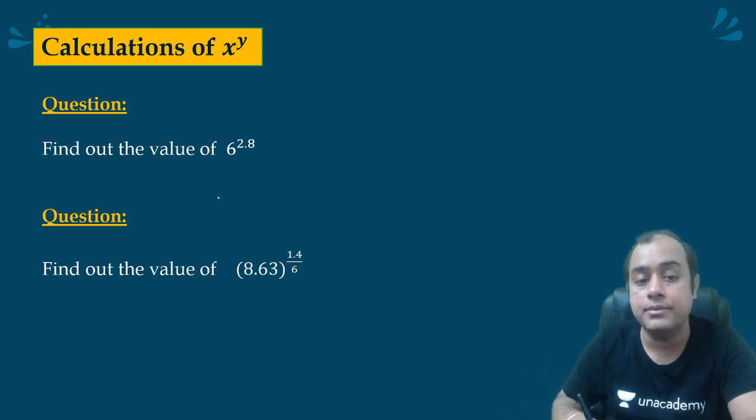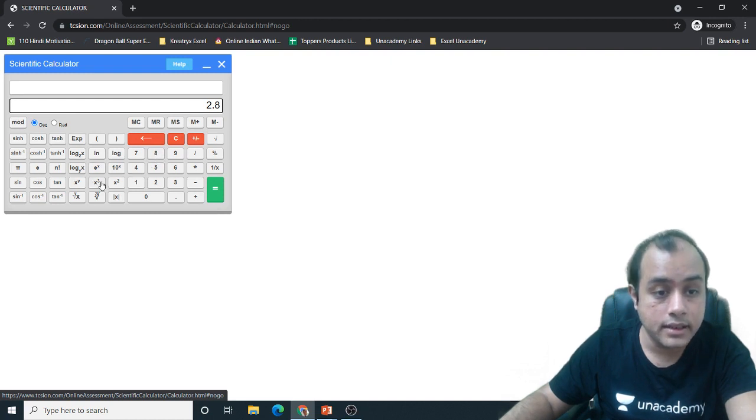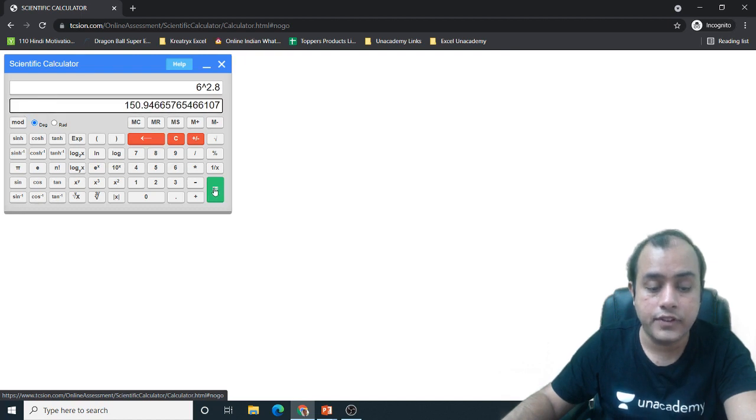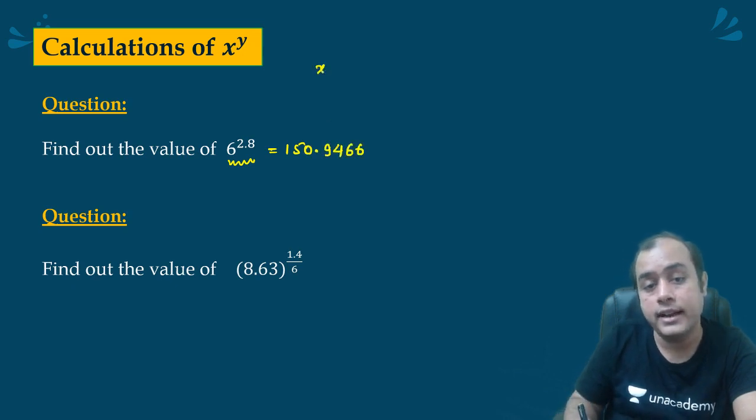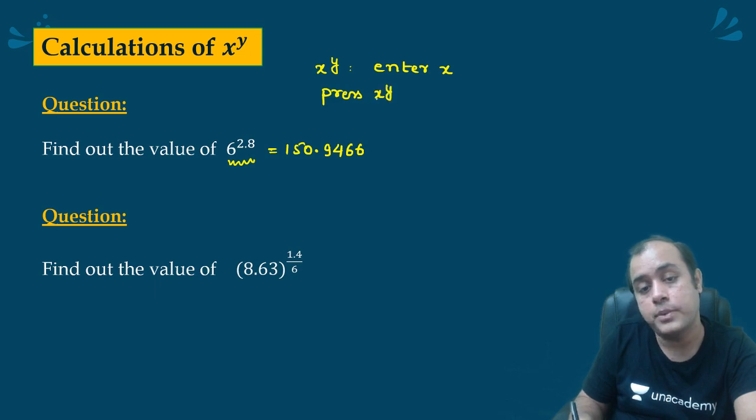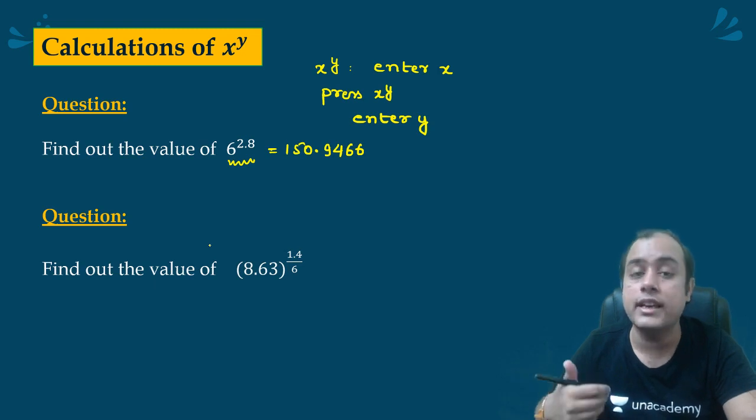Now calculation of x to the power y, 6 to 0.8. Let us see how we will calculate. So we will write 2.8, then x to the power y. In this you have to go from left to right. 150.9466. So here for x to the power y, enter x, press x to the power y, then you enter y. And see how easily I discovered this basically. Why was it? Because I actually experimented. So even in gate if you forget, you can just try it out. In a few seconds you will come to know.